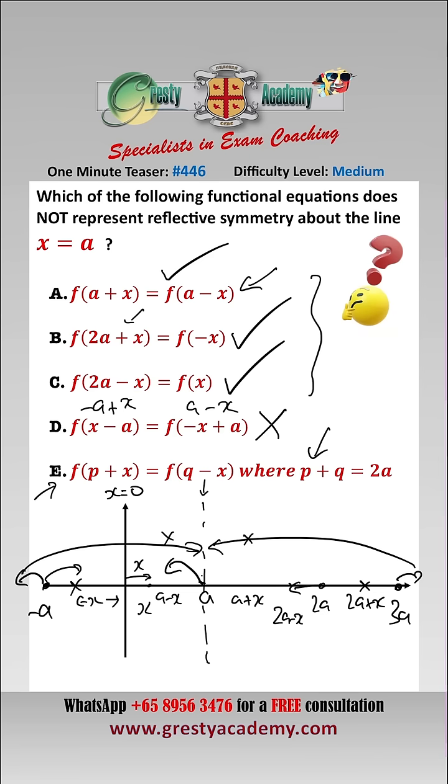So there will still be reflective symmetry about the line x equals a. So that one has reflective symmetry as well. So the answer is D.